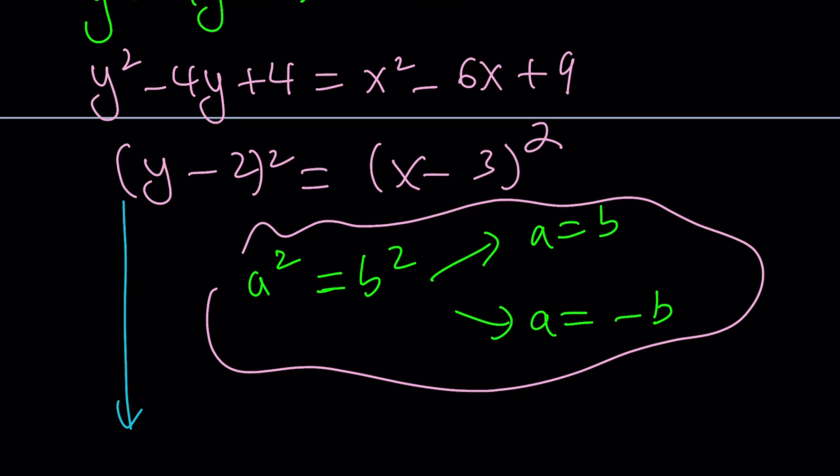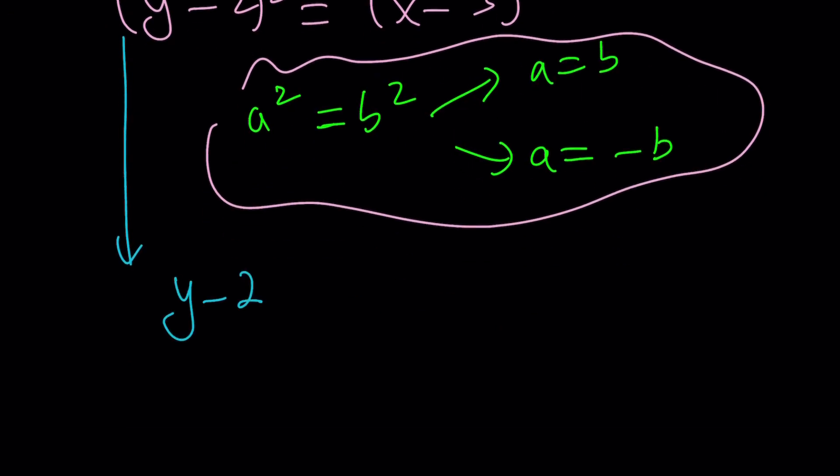If you set these equal to each other directly, y minus 2 becomes x minus 3. And from here, add 2 to both sides. You get y equals x minus 1.